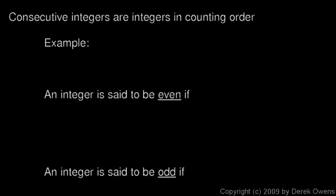Next, we'll talk about consecutive integers. Consecutive integers are simply integers in counting order. So, for example, the numbers 5, 6, 7, 8, and so on. They're in order. So, these are consecutive, and that's what the word consecutive means, just one after the other.